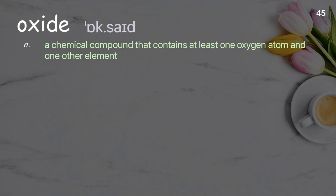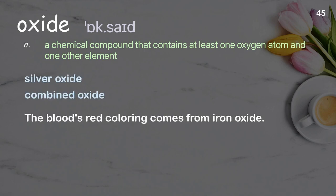Oxide: a chemical compound that contains at least one oxygen atom and one other element. The blood's red colouring comes from iron oxide.